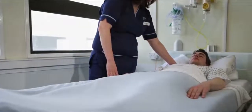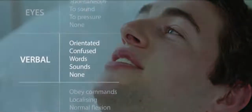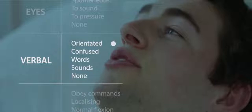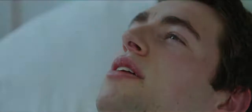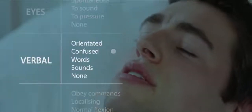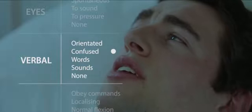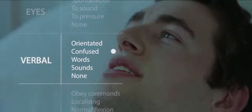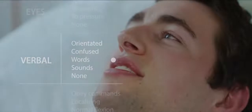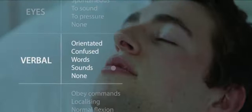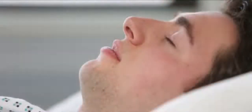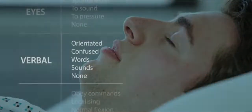To assess the verbal response, ask the patient to tell you their name, where they are and what month it is. If they answer correctly, record 'orientated'. If during conversation the patient is able to speak in phrases or sentences but is unable to give the correct answers to these questions about orientation, record 'confused'. If they do not talk sensibly but utter single words, record 'words'. If the patient moans and groans with no recognisable words, record 'sounds'. If the patient makes no sounds at all, record 'none'.